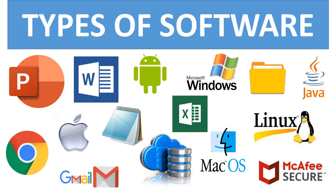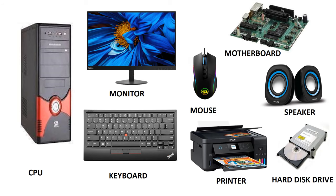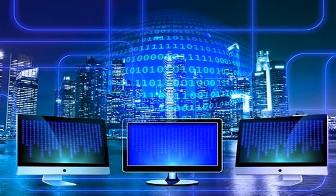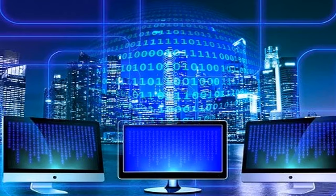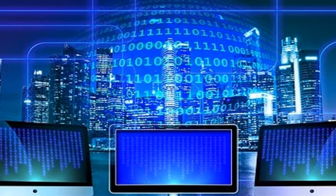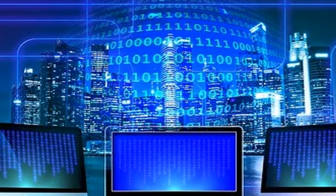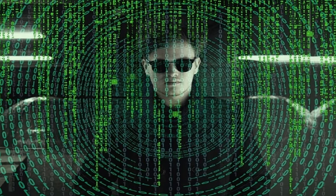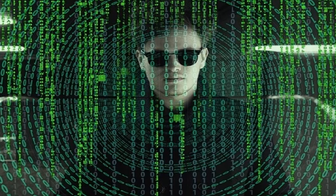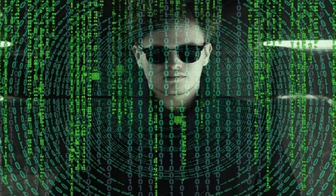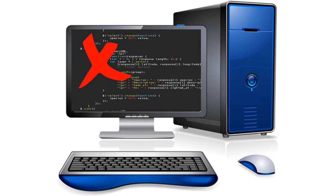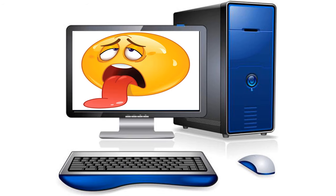Types of Software. Computer software is a set of instructions that guides the computer hardware and tells the hardware what to do, when to do, and how to do a task. Software gives life to the computer. Without software, the computer is a dead machine.